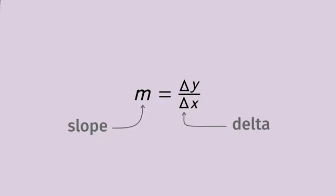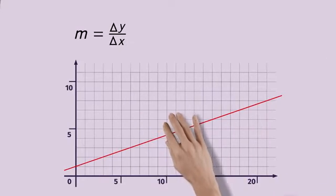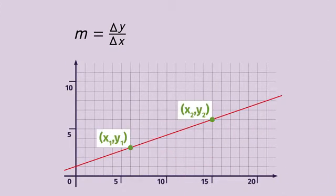To determine the slope of a line, select two points on a line, then calculate delta y, the change of the y values, to determine the change of height. Divided by delta x, the change in the x values, to determine the change of width.